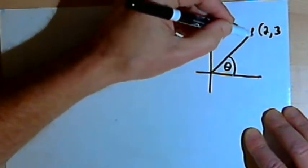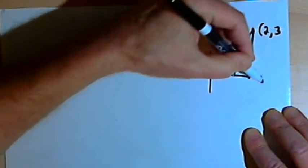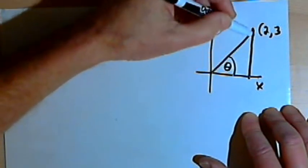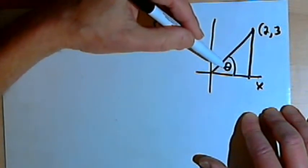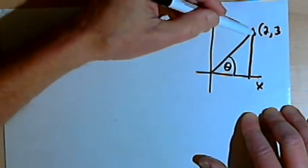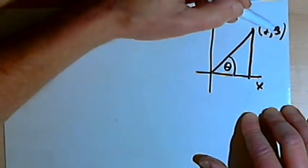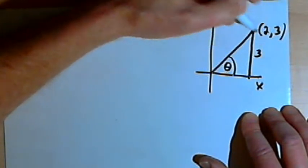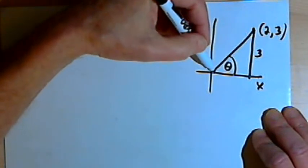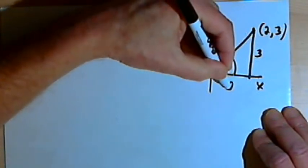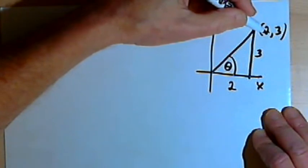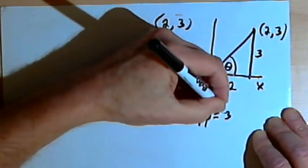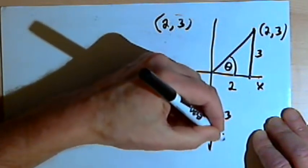Then I'm going to draw another line vertically down from that point to the x-axis. That will give me a side opposite angle theta. The length of that side is going to be the y-value for the point, so the length of that side is 3. For the side adjacent to angle theta, I'm going to have a length of 2 — that's the x-value for the point. So the opposite is 3, and the adjacent is 2.